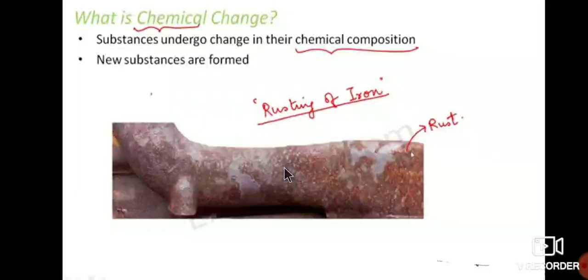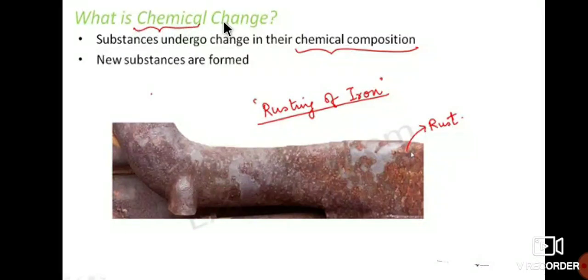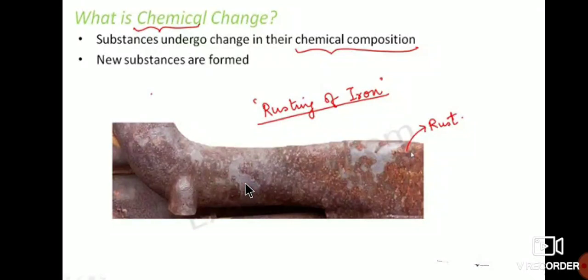Now let us move on to chemical change. What is chemical change? A substance undergoes a change in its chemical composition. In a chemical change, new substances are formed. For example, rusting of iron is an example for chemical change because new substances are formed.